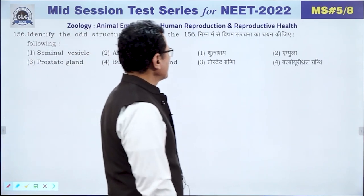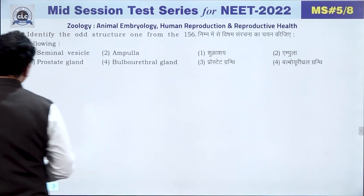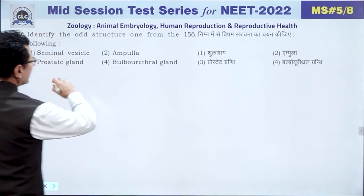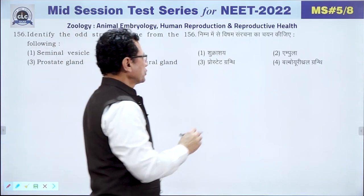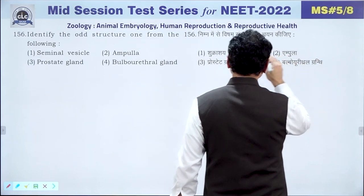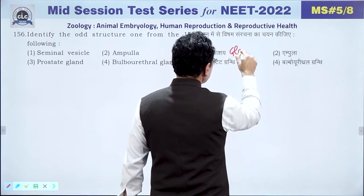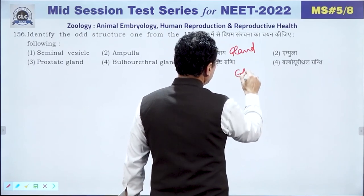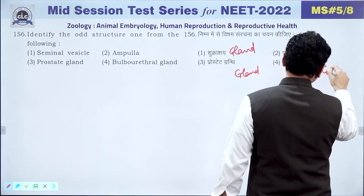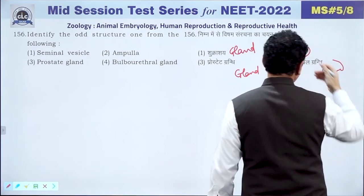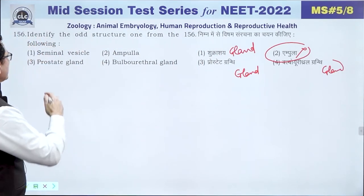Question 156: Among seminal vesicle, ampulla, bulbourethral gland, and prostate gland — the odd structure is ampulla. Seminal vesicle, bulbourethral gland, and prostate gland are all glands. Ampulla is simply a dilated portion, not a gland. The answer is 2 — ampulla.